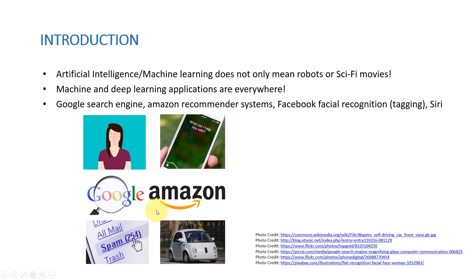In Amazon as well, there are recommender systems. When you buy or purchase a product, you find Amazon recommending products that customers who bought this item also bought. These recommendations are not haphazard — there is a machine learning algorithm, what we call a recommender system, working in the background based on purchase history and the behavior of other customers.